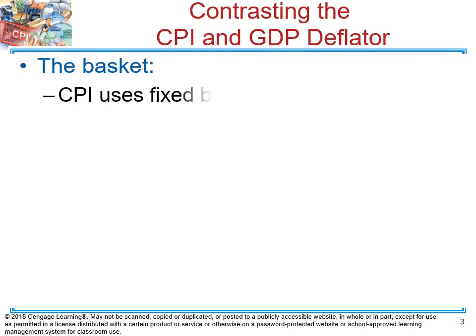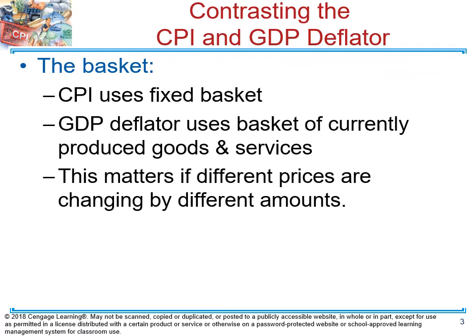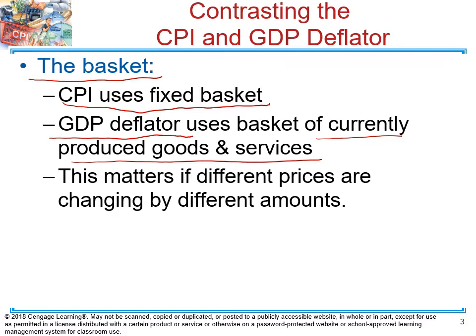The last difference is fairly simple. CPI uses a fixed basket of goods. But when calculating the GDP deflator or nominal GDP, we use currently produced goods and services, meaning the quantity of goods and services changes from year to year. So the CPI basket is fixed, while the GDP deflator uses current quantities.